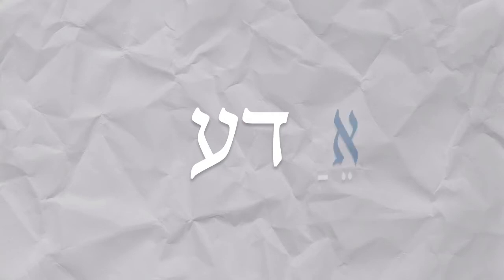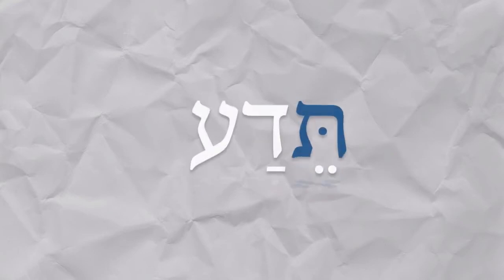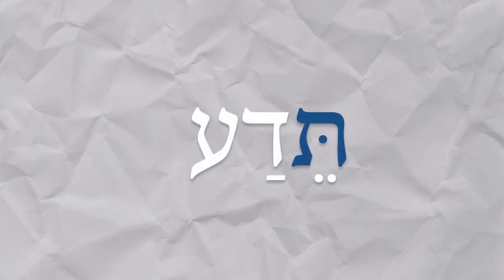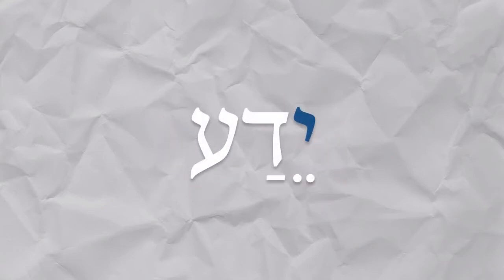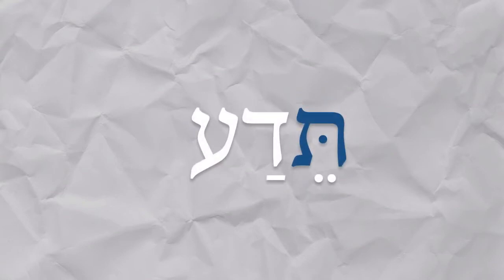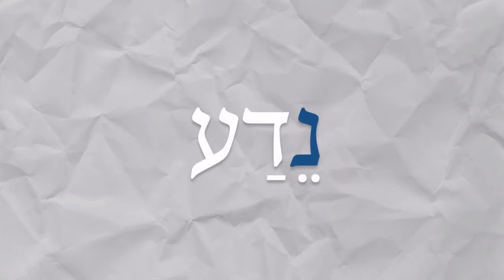So when we conjugate it, we add our signal letters. Here's the aleph for 'ani': ani eda. Ata: teda. At: teda. Hu: yeda. Hi: teda.